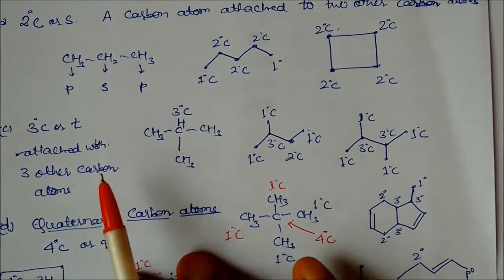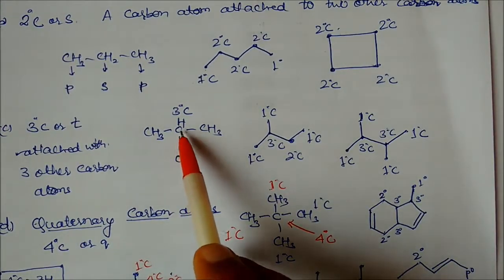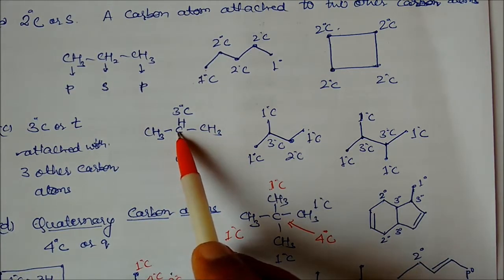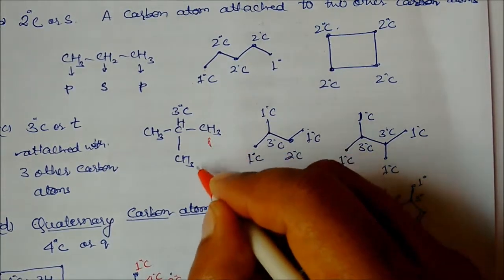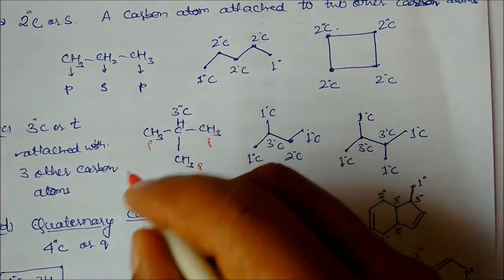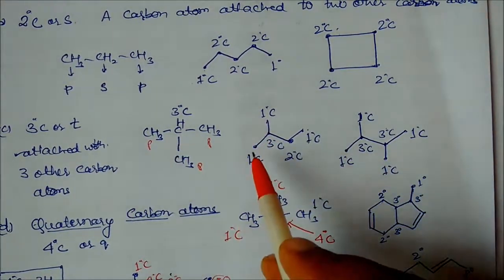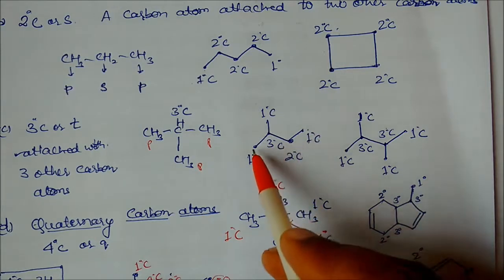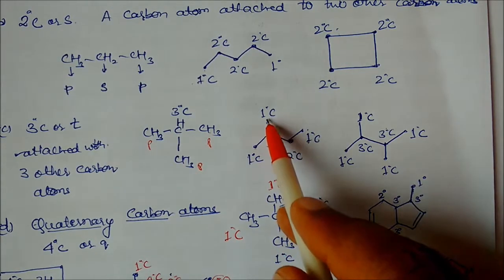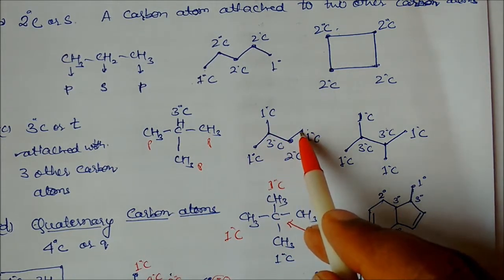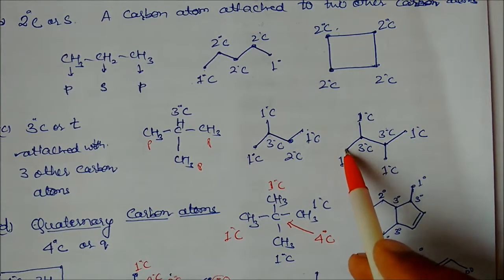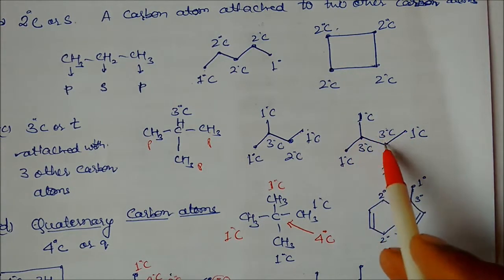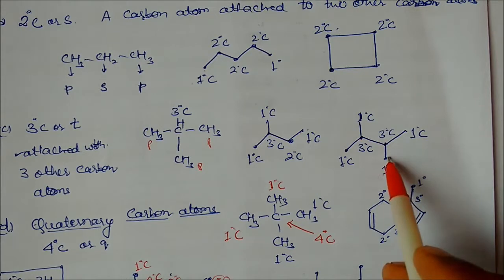Tertiary carbon is a carbon attached to three other carbon atoms. You can see here: one carbon, two carbons, three carbons — this is called a tertiary carbon. The end carbons with only one attachment are primary carbons. You can also identify primary and secondary carbons in bond line notation in the same way.